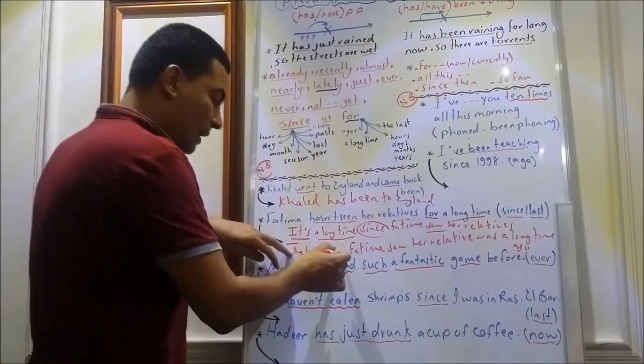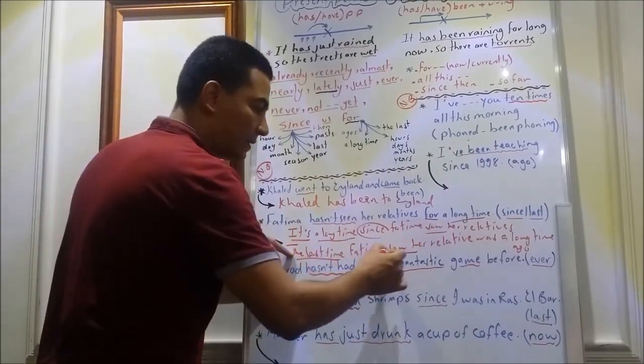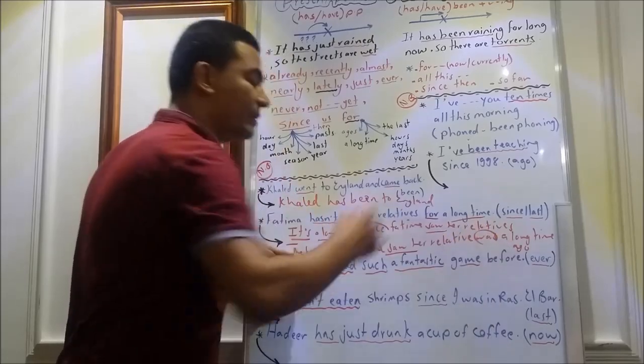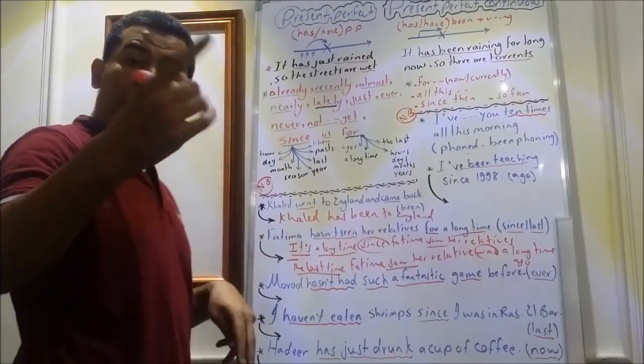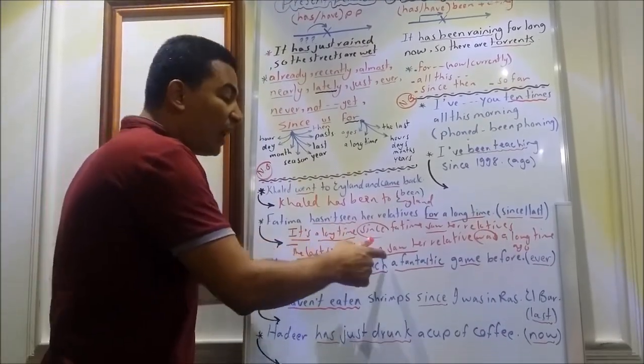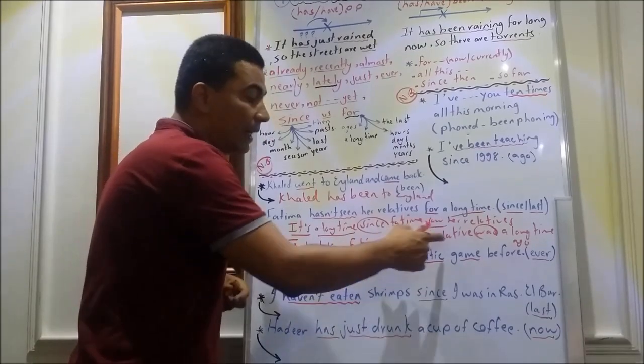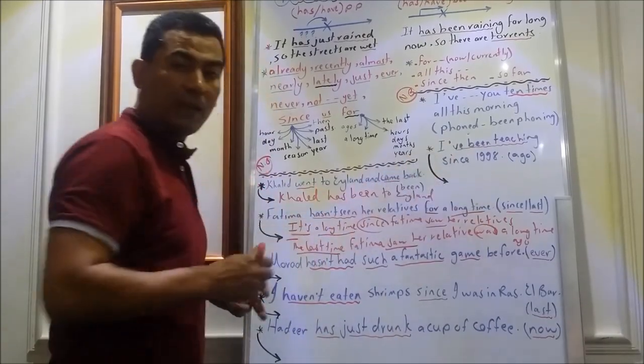Here, the last time plus past simple was plus a period of time and ago. So, I can say Fatima last saw her relatives a long time ago.